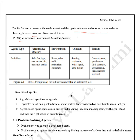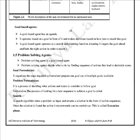Goal-based agents have an agenda and operate based on the goal in front of them, making decisions on how best to reach that goal. A goal-based agent operates as a search and planning function — it targets the goal ahead and finds the right action to reach it. To achieve the goal it makes use of many searching techniques, which will be discussed in upcoming videos.